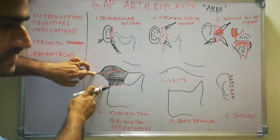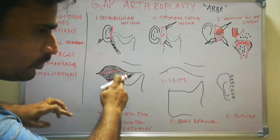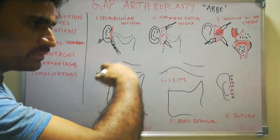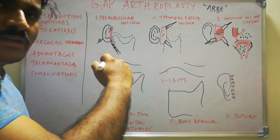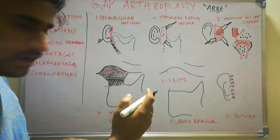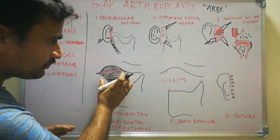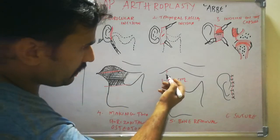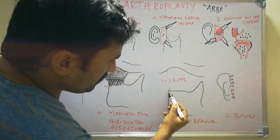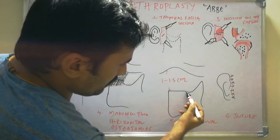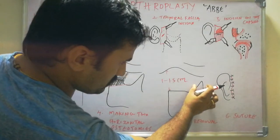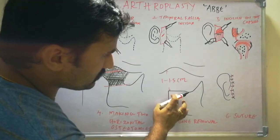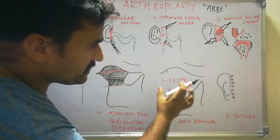With these two osteotomies, remove the complete bony chunk. You can shape the glenoid fossa with a bone-cutting burr after removing the chunk. After removal, you can see the glenoid fossa and the remaining condylar stump with the coronoid process — a gap of at least 1 to 1.5 cm has been created between the glenoid fossa and the remaining condylar stump.